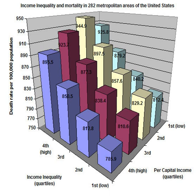Population health has been defined as the health outcomes of a group of individuals, including the distribution of such outcomes within the group. According to Icarofei, the working definition of population health is expressed thus: population health is an art, process, science, and a product of enhancing the health condition of a specific number of people within a given geographical area.